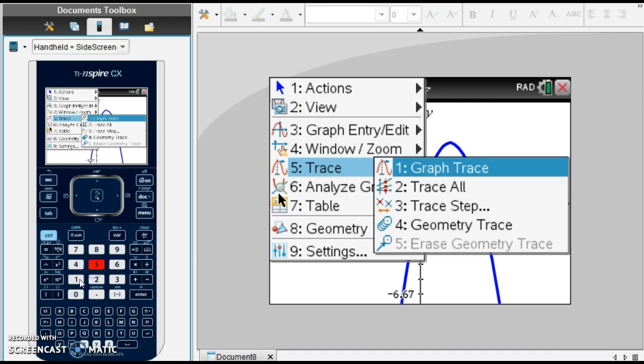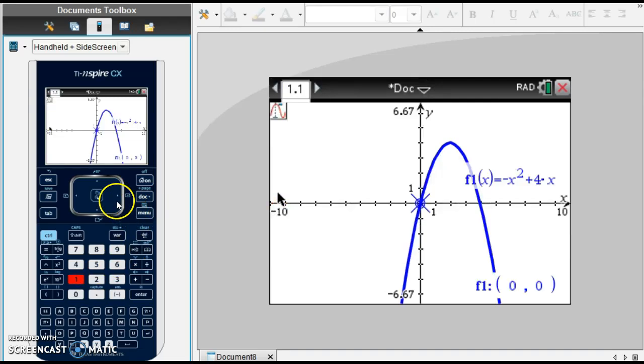Menu, trace, graph trace. And we're going to move our cursor until we get to the top. And there's our maximum.